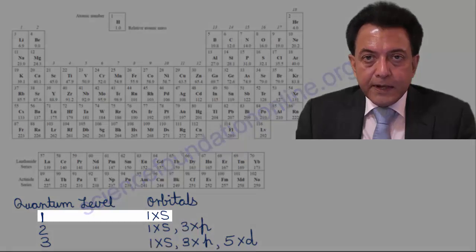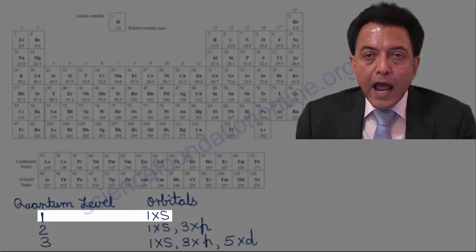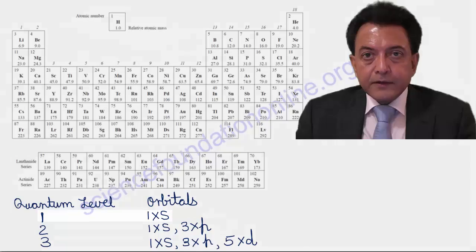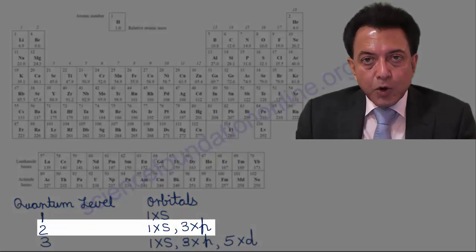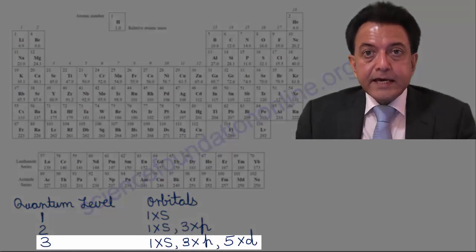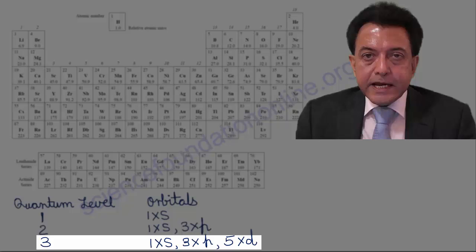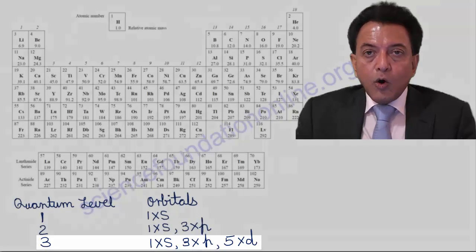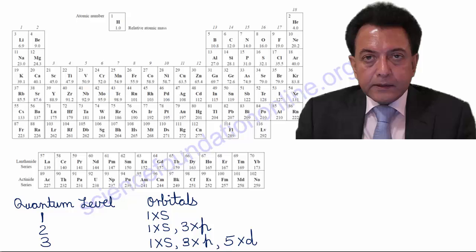Also, the first quantum level can only have an S orbital. The second quantum level has S orbitals as well as P orbitals, while the third quantum level has S, P, and D orbitals. Also, keep in mind that each orbital can accommodate a maximum of only 2 electrons. The Aufbau Principle, by the way, Aufbau is the German word that means progressively building upwards.